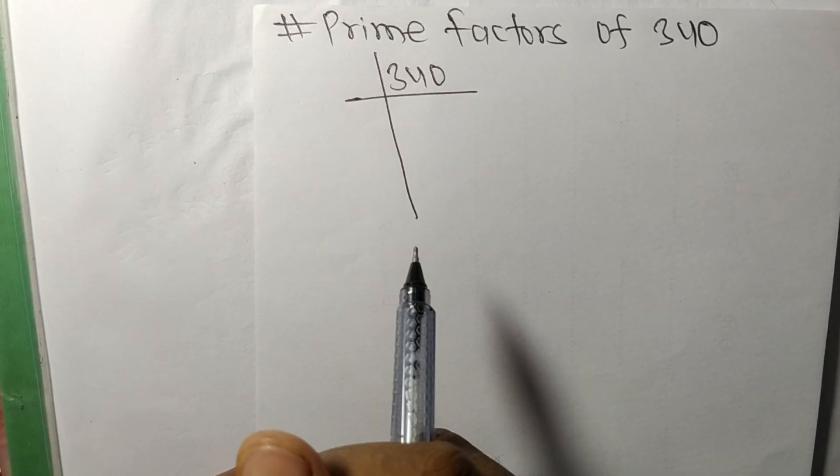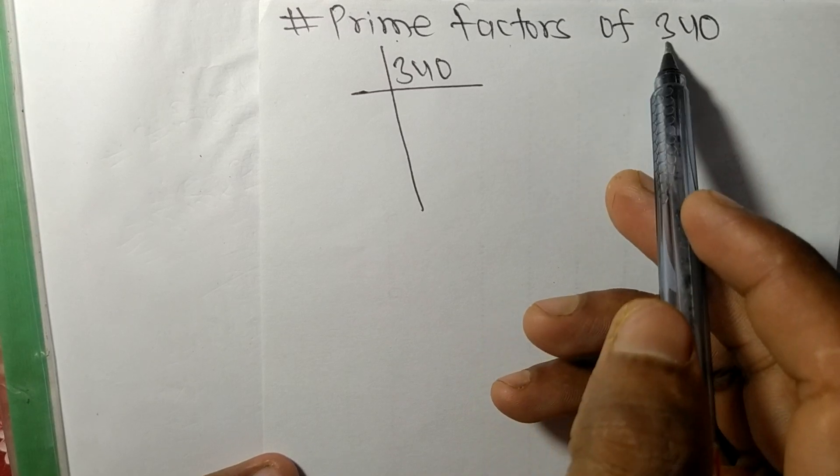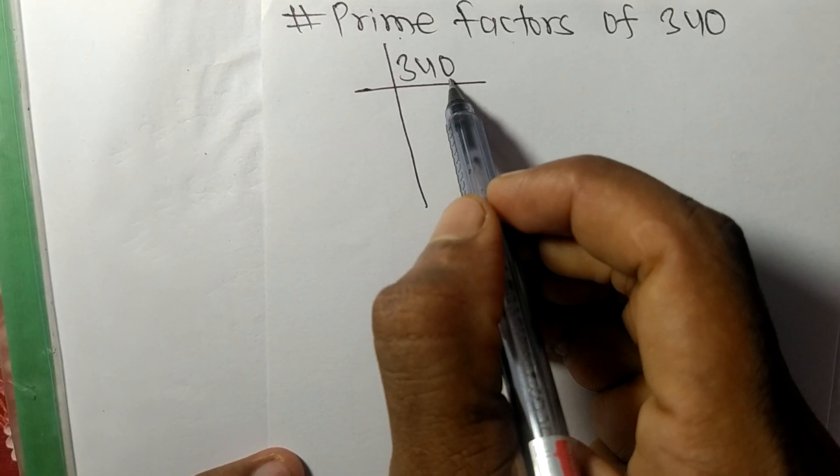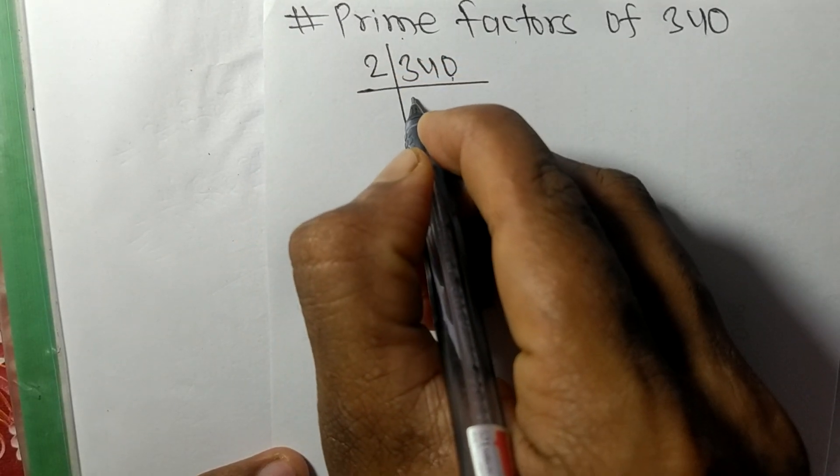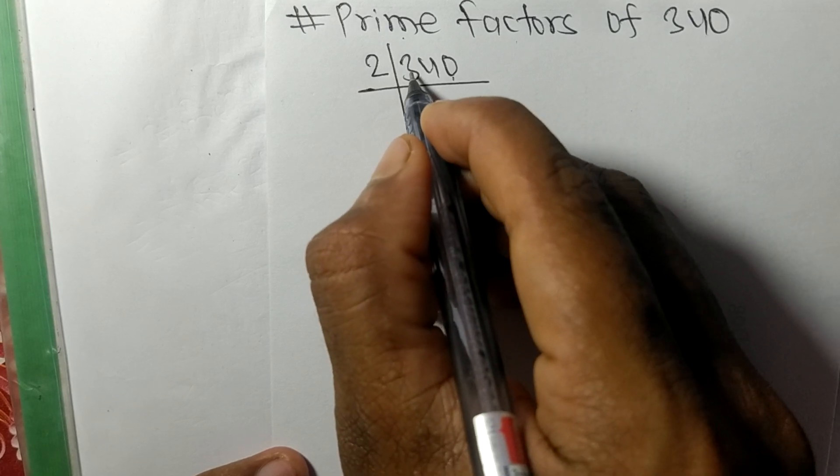Today in this video we shall learn to find the prime factors of 340. At last it contains 0, so this number is divisible by 2. So 2 times 1 means 2, remainder 1. So 14, 2 times 7 means 14, and 2 times 0 means 0.